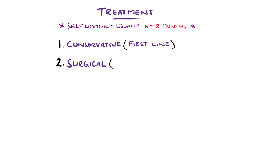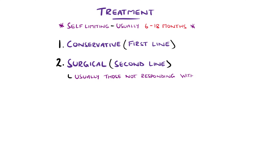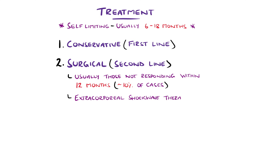In those who do not respond to conservative measures after 12 months, which is roughly 1 in 10 people, further options include extracorporeal shockwave therapy, with 70% of patients reporting an improvement at 3 months, or surgical intervention such as a plantar fascia release. Recovery is often slow, but most patients do see an improvement.